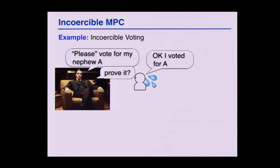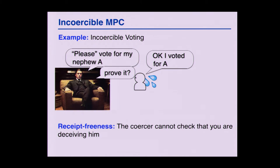On a very high level, the goal of an incoercible protocol is to help this guy pull this trick off. In the voting literature, this is called receipt-freeness, because it essentially means that the protocol has no actual receipt that the coercer can ask for.